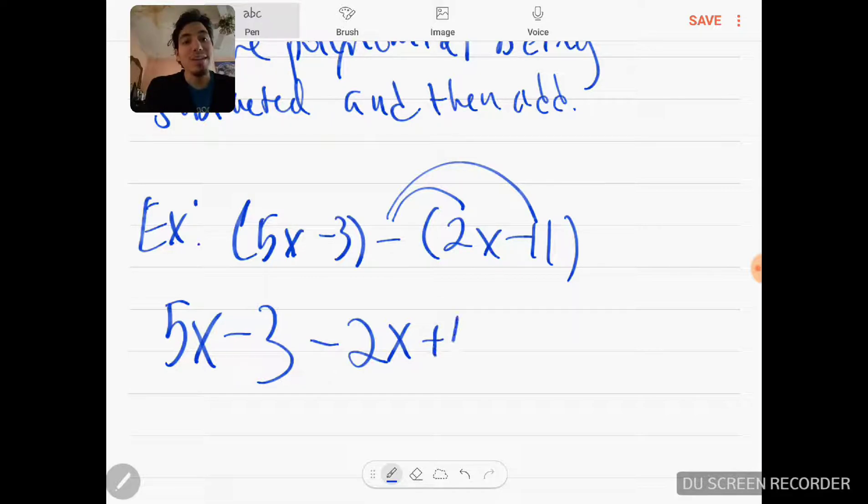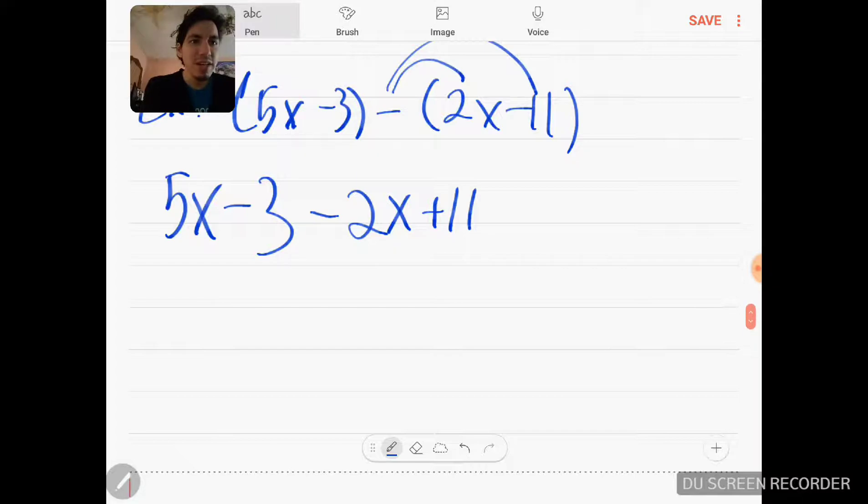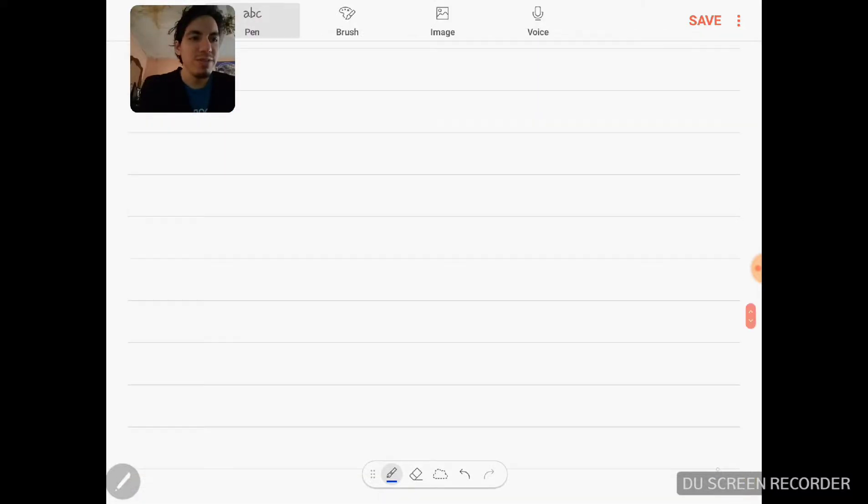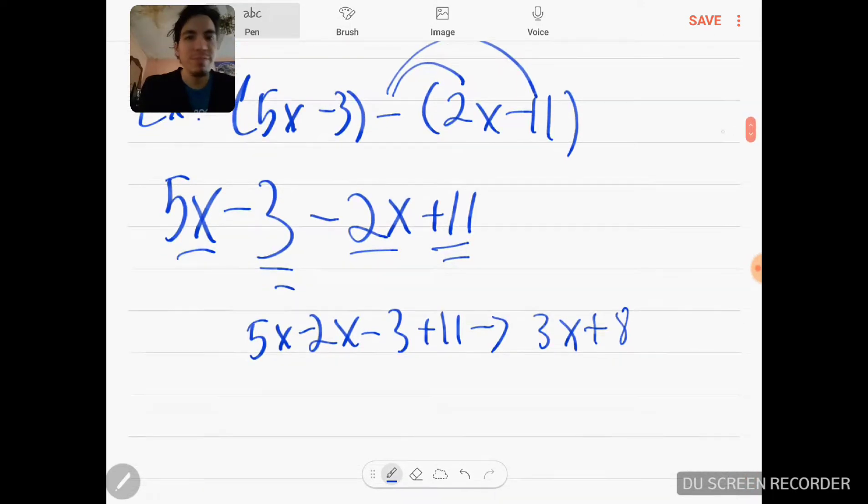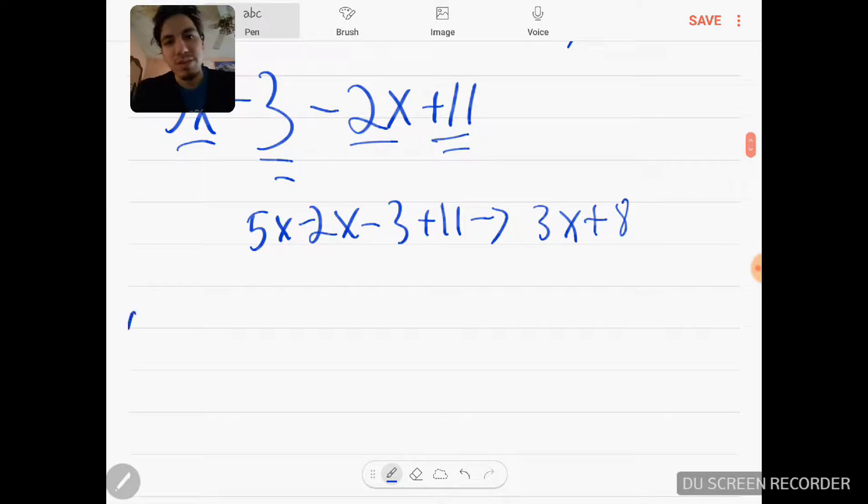Negative times negative would be positive 11. And then you just simply add and combine like terms like we were doing with addition. So I have 5x minus 2x minus 3 plus 11. Then I get 3x plus 8 as my final answer. So that's one example. We have plenty more examples to go through.